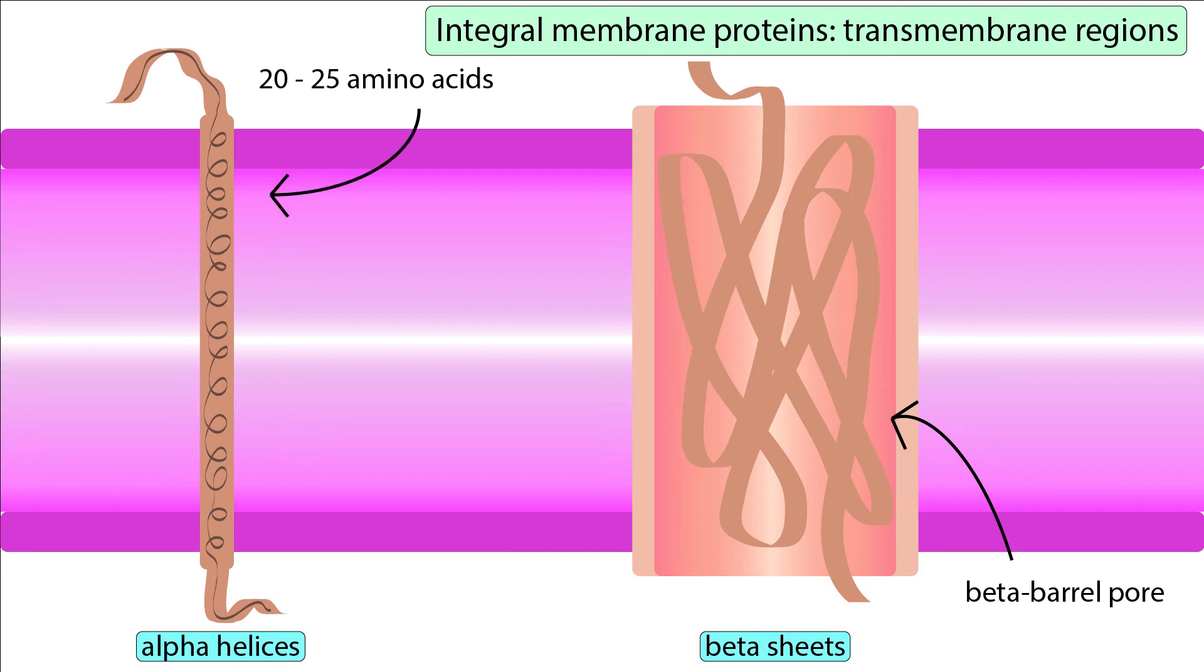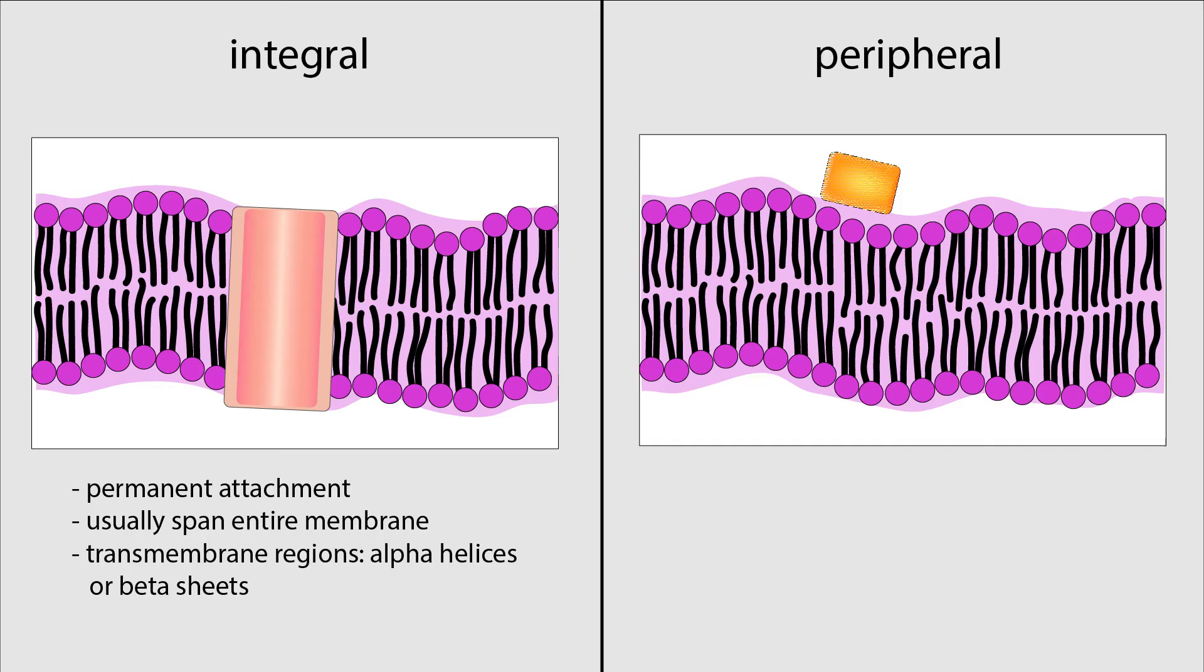Transmembrane alpha helices have 20 to 25 hydrophobic amino acids that reside inside the membrane and two hydrophilic ends extending out on either side. These transmembrane domains keep integral membrane proteins permanently bound to the membrane.